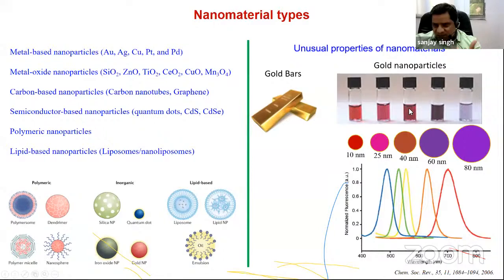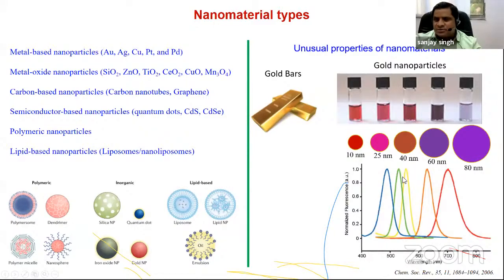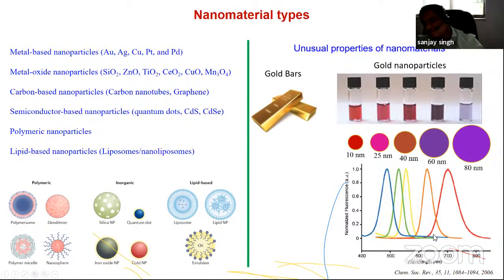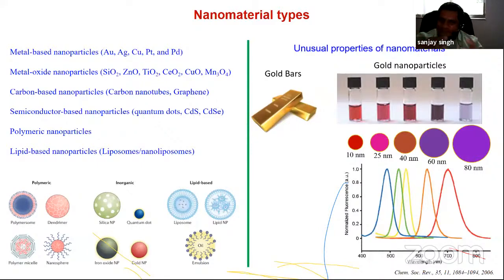When you run UV-visible spectra, different-sized gold nanoparticles absorb at different wavelengths. The smallest nanoparticles absorb around 500 nm, and the largest at 70–80 nm shift towards 700 nm. This is called size-dependent optical property. Similarly, silver metal looks white, but silver nanoparticles appear yellow in suspension.